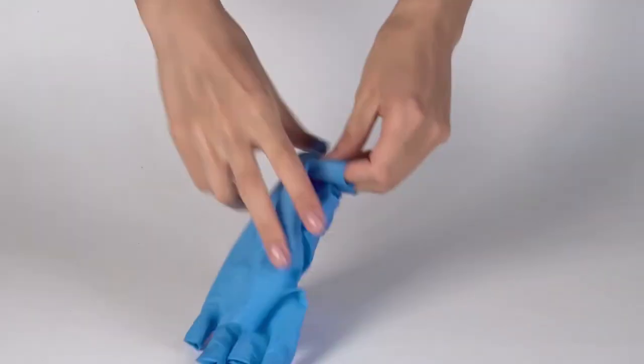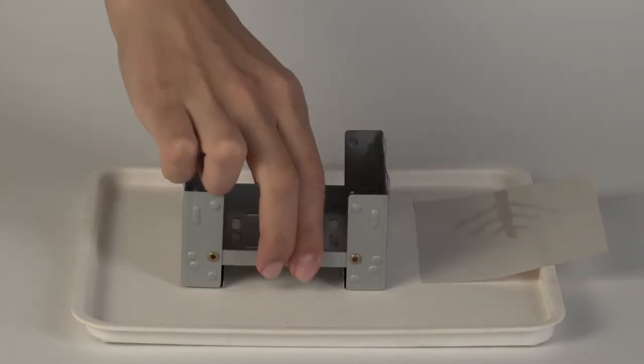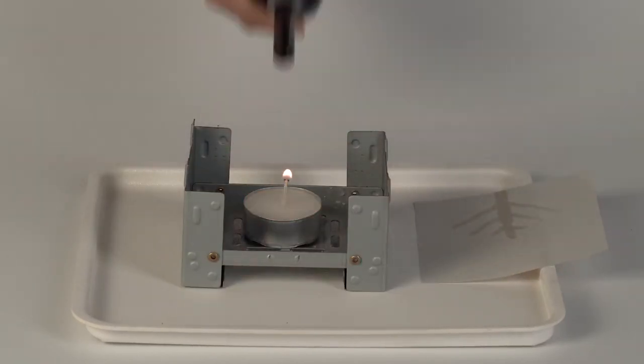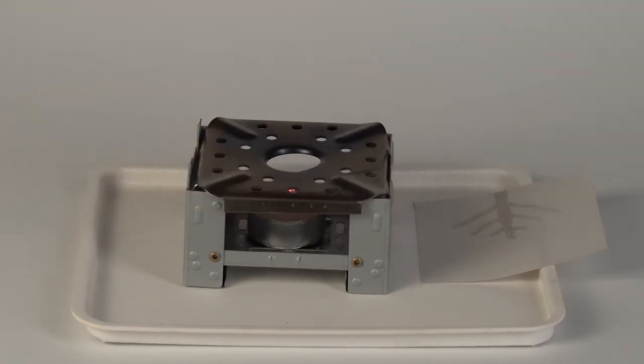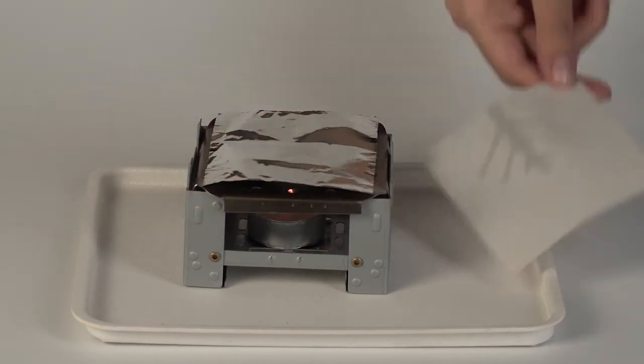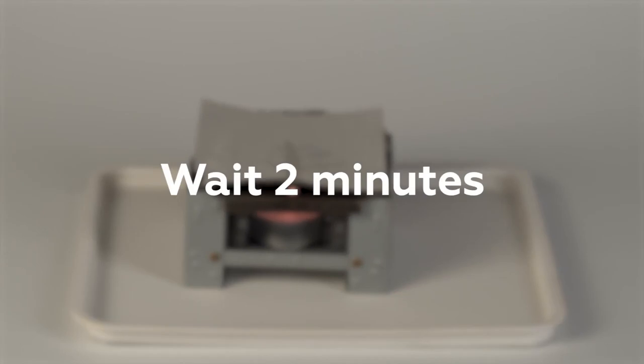Take the gloves off. Put the candle into the solid fuel stove and light it. Put the flame diffuser onto the stove and cover it with a piece of foil. Place the paper sheet onto the foil and wait for 2 minutes until the image dries.